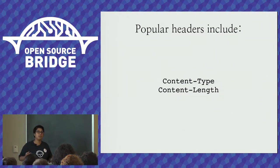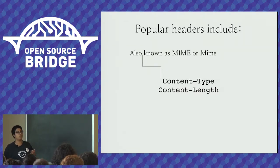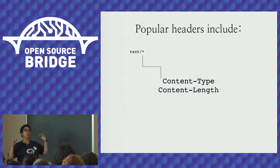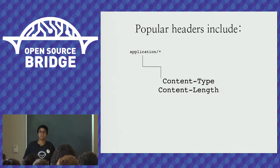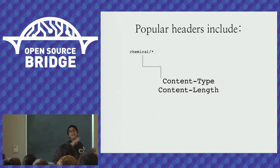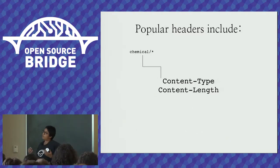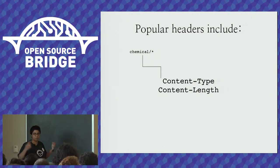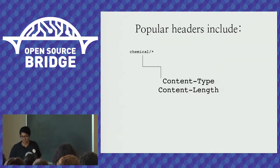Let's talk about some headers you'll send in requests or receive in responses. Content-Type and Content-Length — you've probably seen Content-Type before; some people think of it as MIME. Popular classifications include text/plain, text/html, and application/json. There's also a chemical one — there was a time when we had a variety of chemical markup languages with first-class status in MIME to describe molecules, so hats off to you chemists and data scientists.